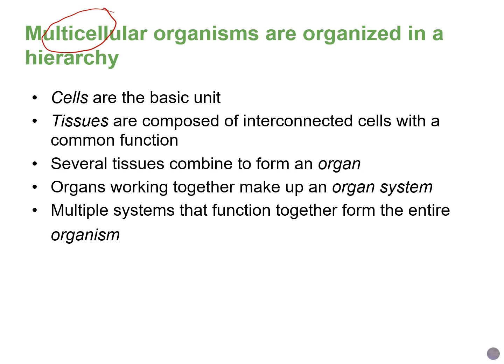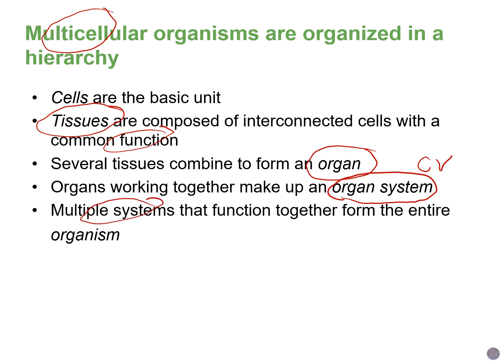When we put together cells that have common functions, we get tissues, like muscle tissue. Many different tissue types usually combine to form an organ. For example, our heart has nervous tissue, muscle tissue. And then organs working together make up an organ system, such as the cardiovascular system. Those multiple systems — like the cardiovascular system and the respiratory system — all work together to help the organism survive.